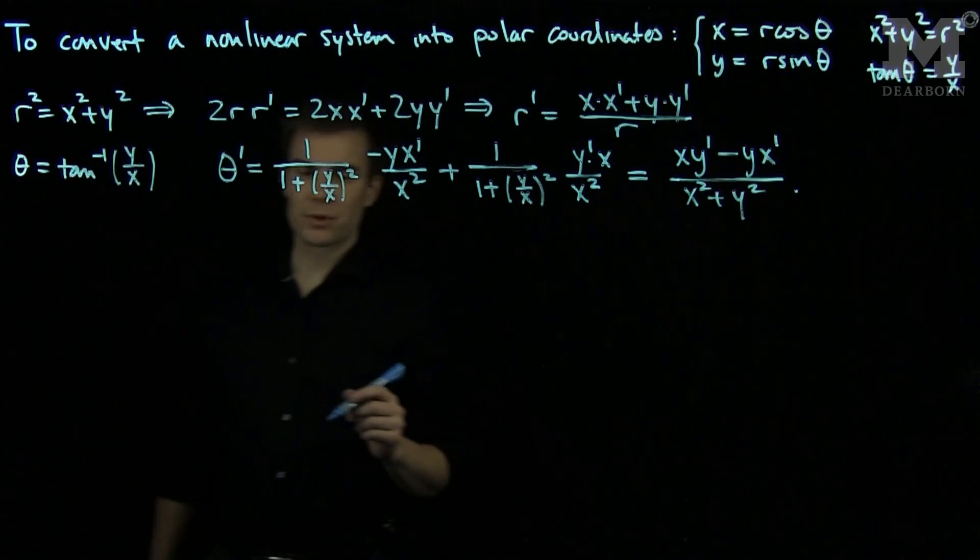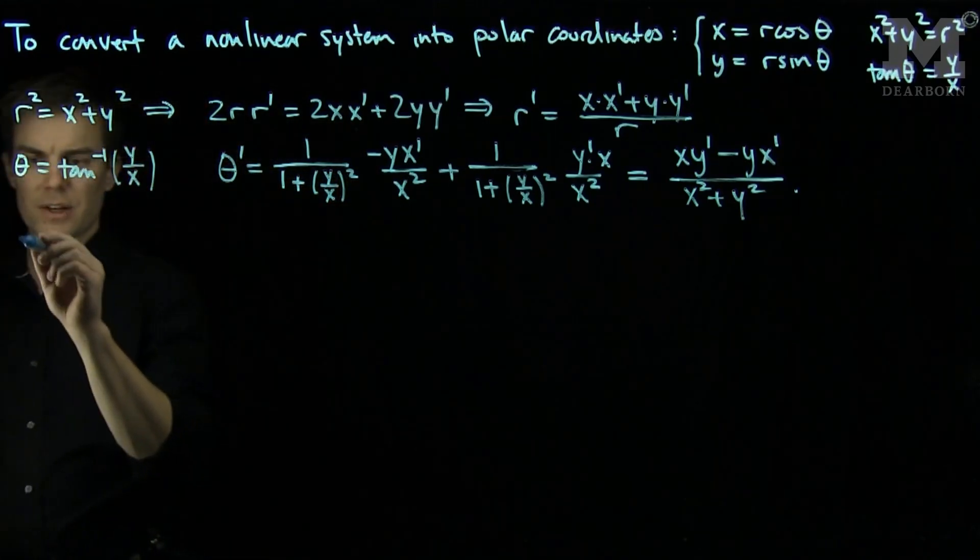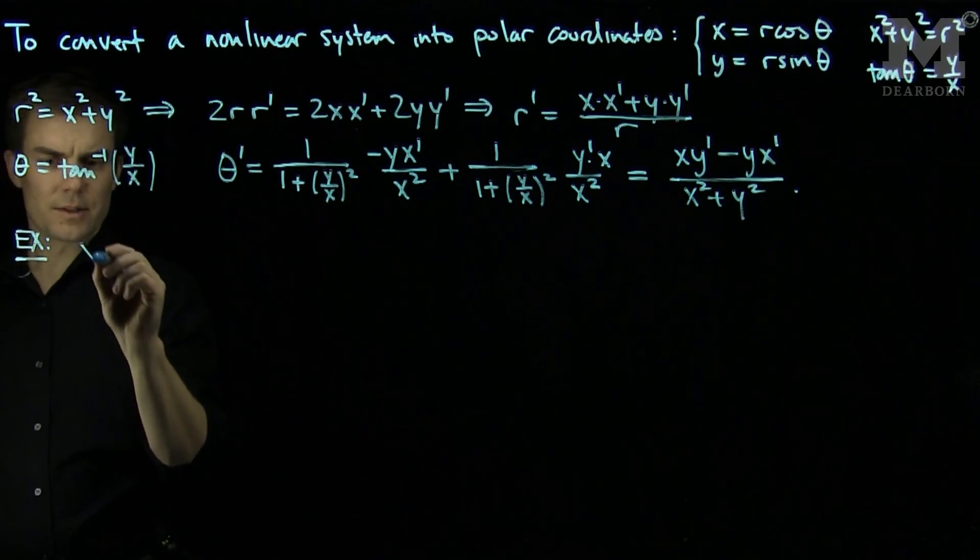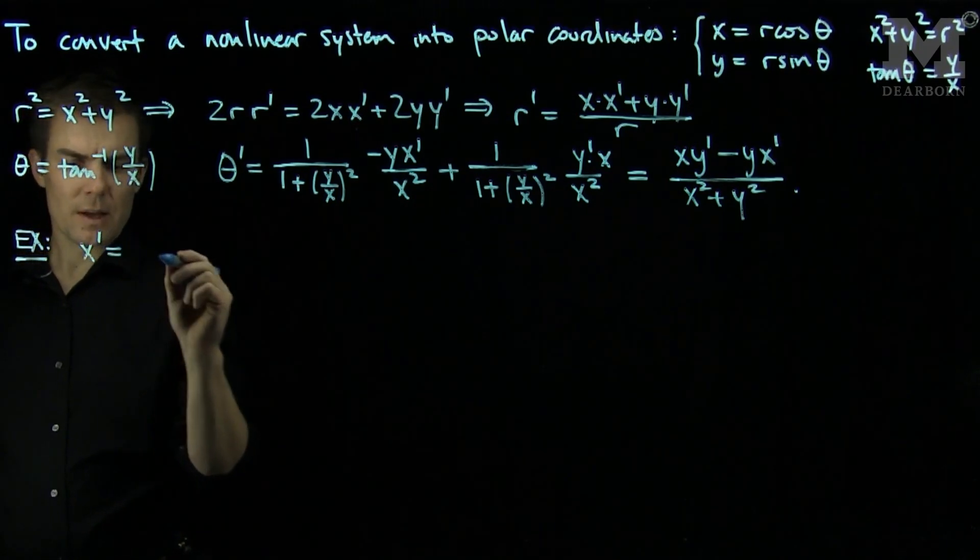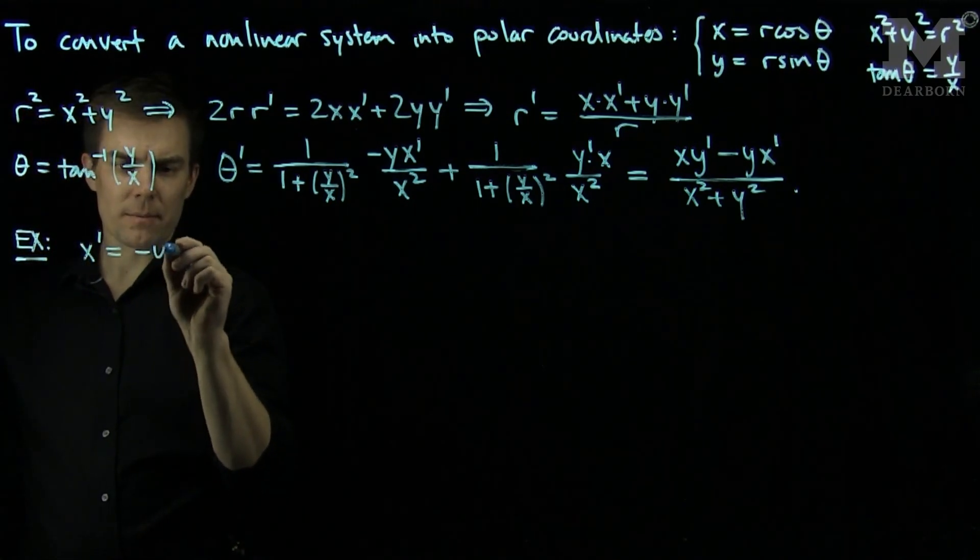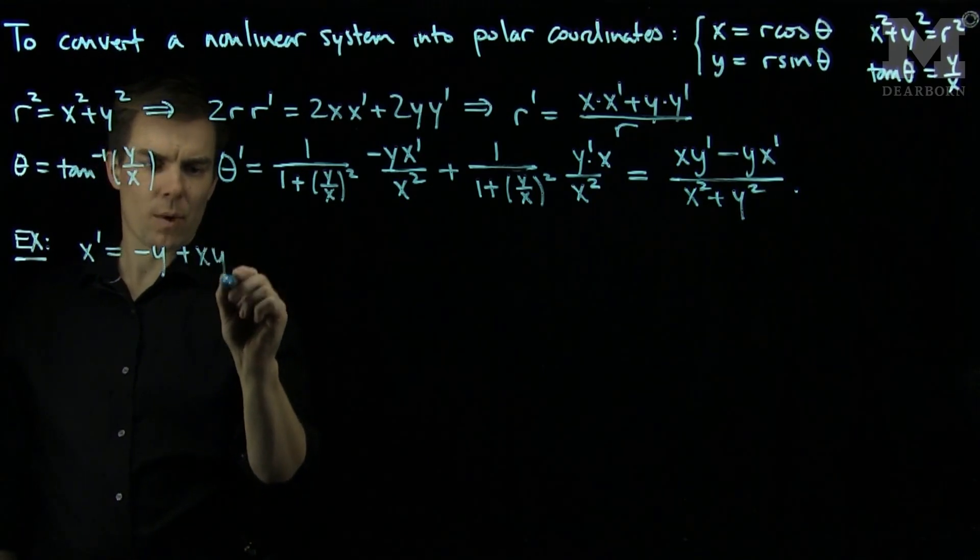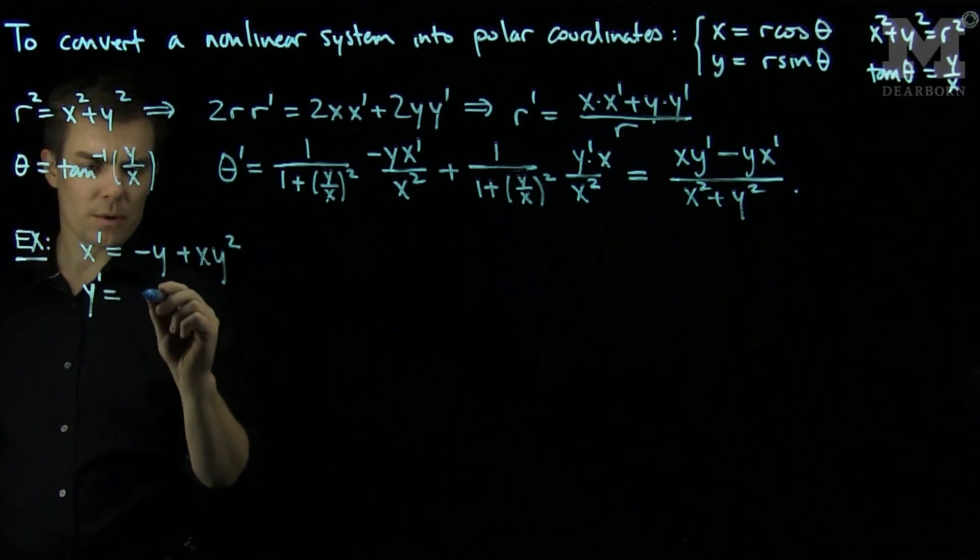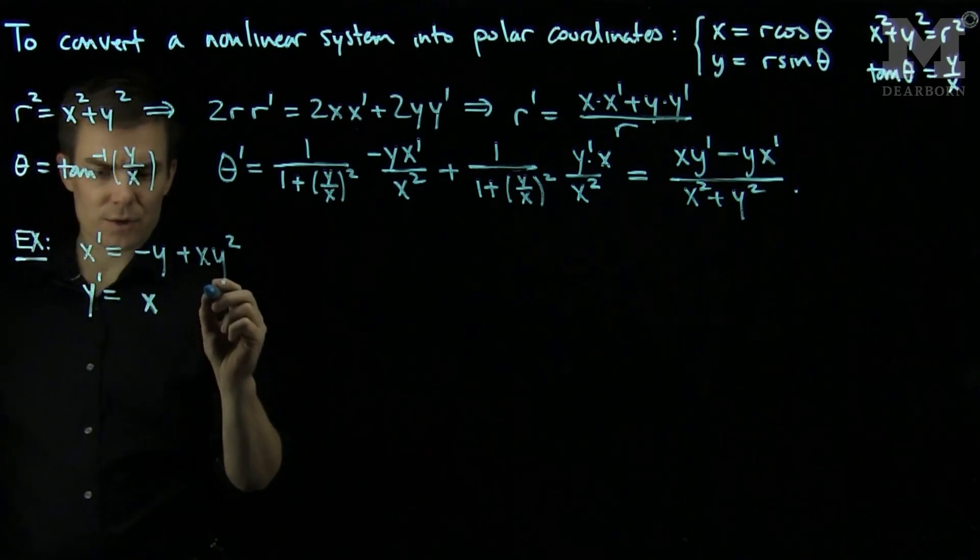Let's see how we can apply this to a particular example. Let's consider x prime equals negative y plus x y squared, and y prime equals x plus y cubed.